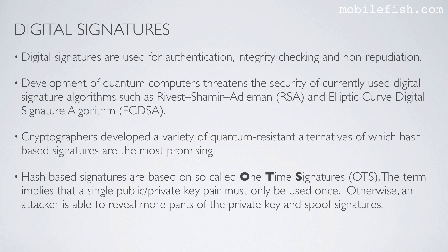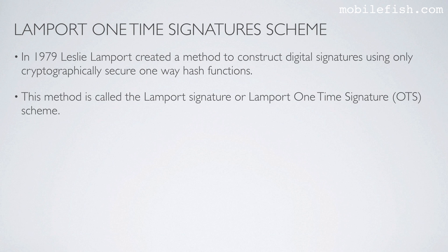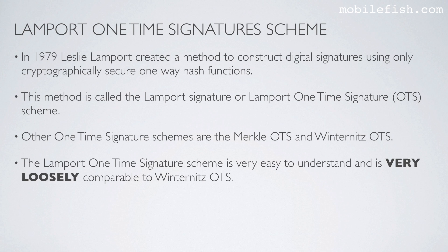Cryptographers developed a variety of quantum-resistant alternatives, of which hash-based signatures are the most promising. Hash-based signatures are based on so-called one-time signatures. The term implies that a single public-private key pair must only be used once; otherwise an attacker is able to reveal more parts of the private key and spoof signatures. In 1979, Leslie Lamport created a method to construct digital signatures using only cryptographically secure one-way hash functions. This method is called the Lamport Signature, or Lamport One-Time Signature Scheme. Other one-time signature schemes are the Merkle OTS and Winternitz OTS.